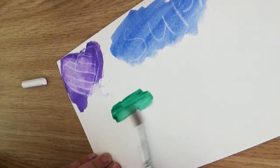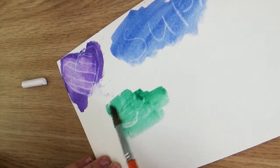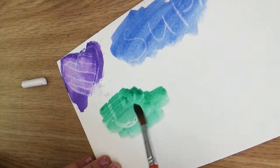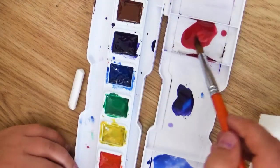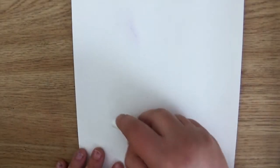A couple more tips before you jump into creating. One, you're going to need to push pretty hard with your crayon. You want that wax to really get stuck on there. The second tip is try different colors together. Mix and blend your colors. This is all about experimenting and seeing what you can create.